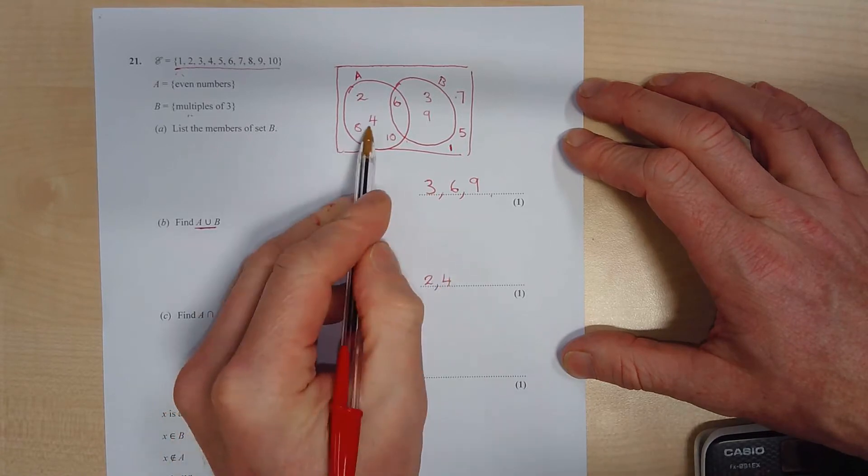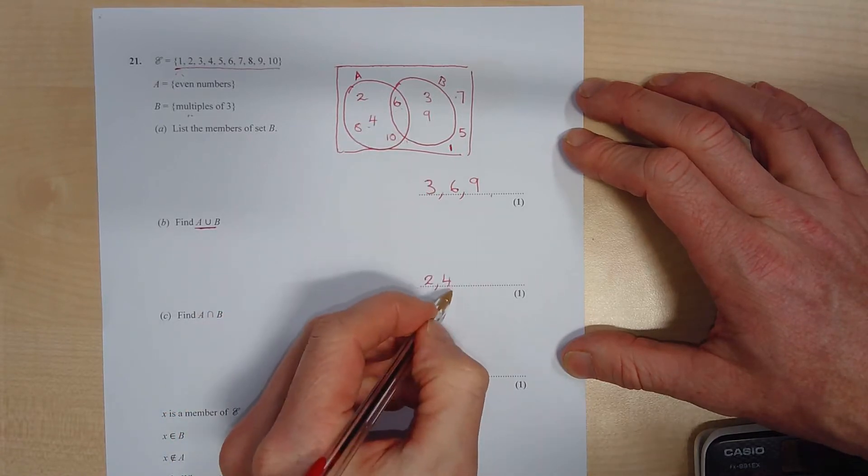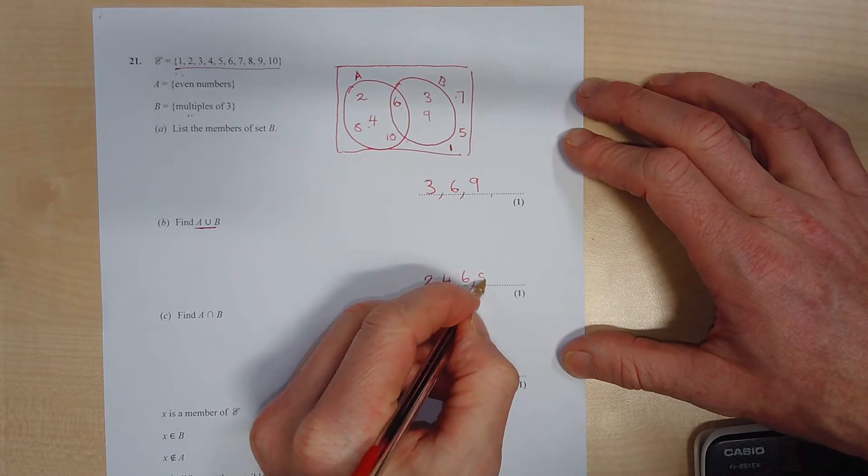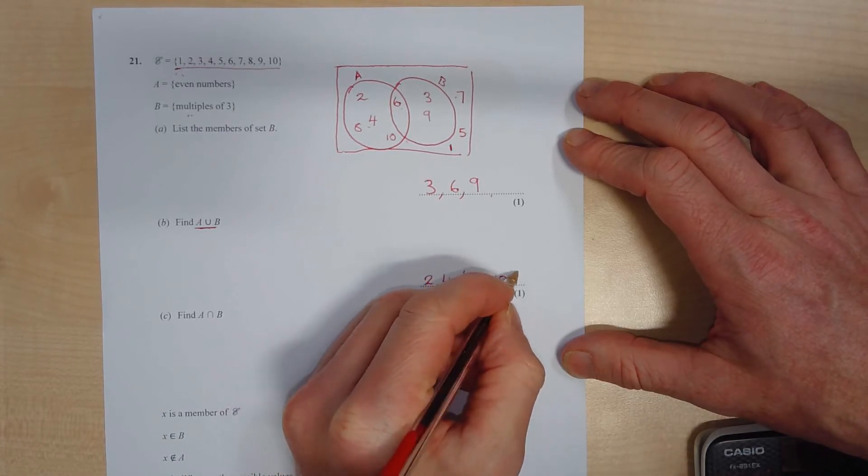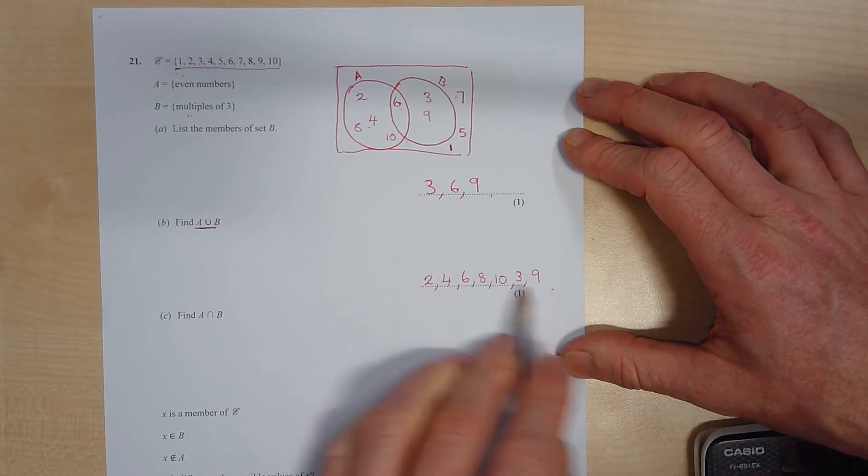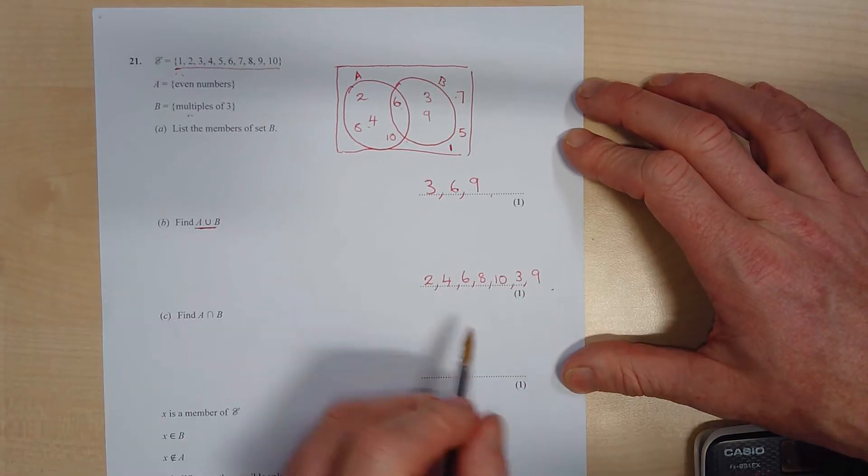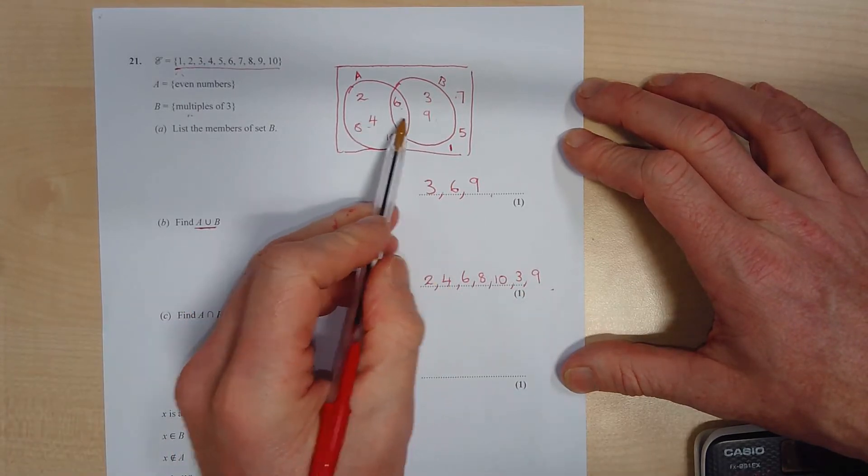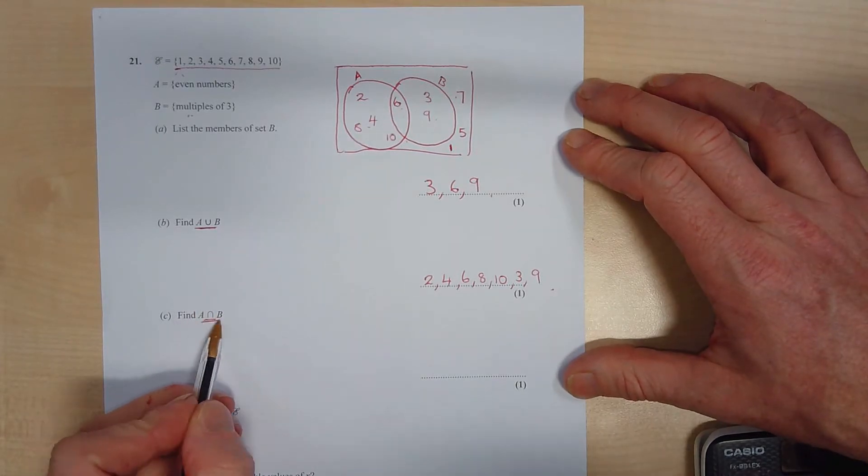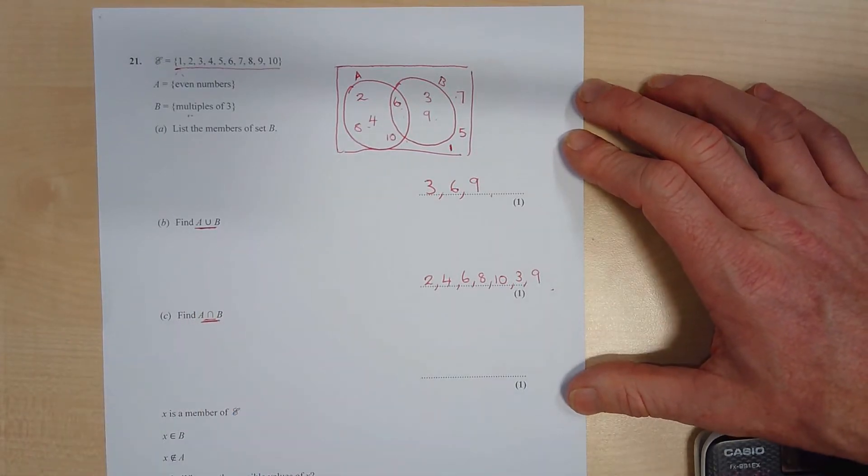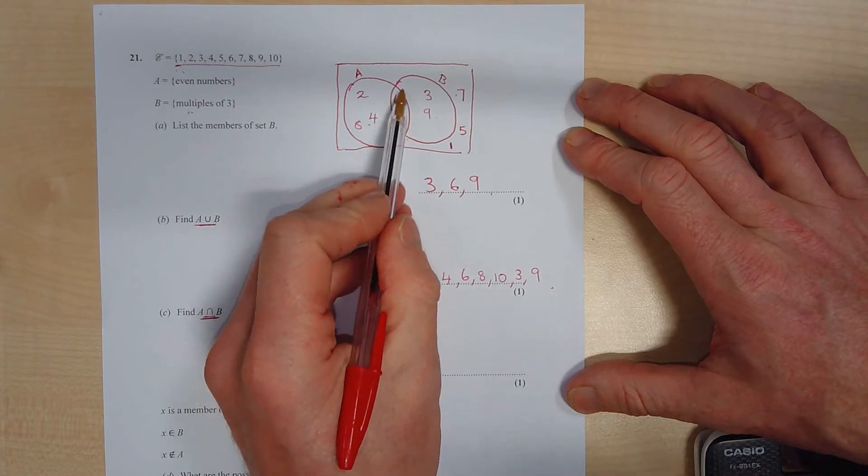Now this sign, this means the union, and that means all the numbers inside the two circles. So we've got 2, 4, 6, 8, 10, 3, and 9. Doesn't matter if you write these in order, really I should have put these in order, but it doesn't matter. So that's all the numbers in the circles in the three different sections.